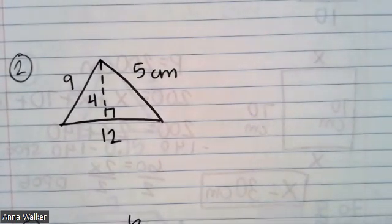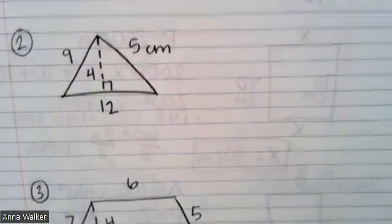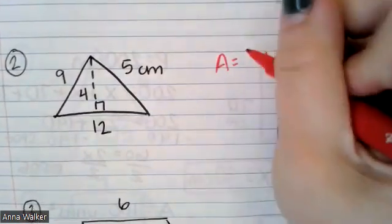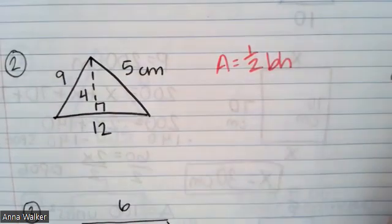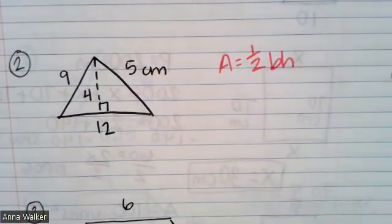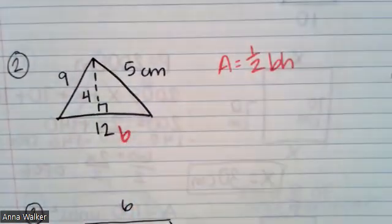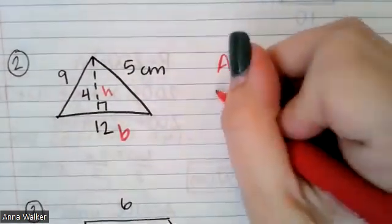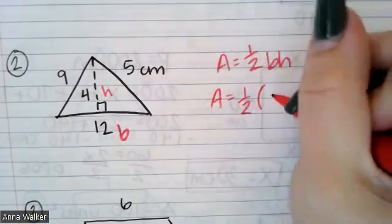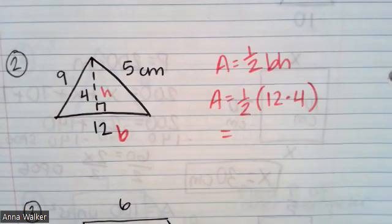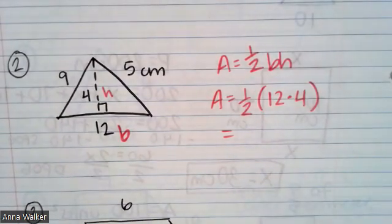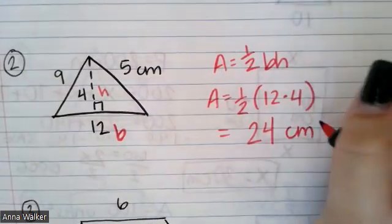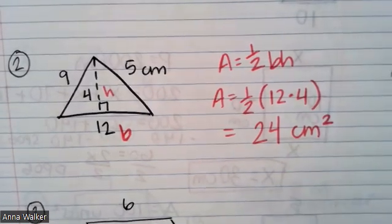In a triangle, they gave us a lot of different information. The formula we need is base times height, and then we take half — you could write one half times base times height, or base times height over two. Either way shows the same math. Our base is 12 — that's the bottom part of the shape. Our height is the dotted line where it forms a right angle, which is four. So the area equals one half of 12 times four. 12 times four is 48, and half of 48 is 24. The units are centimeters, so the area of the triangle is 24 centimeters squared.